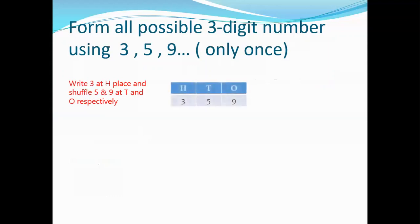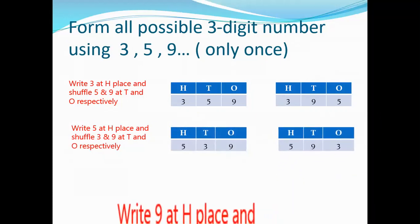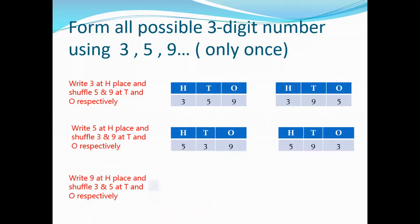Let's take one example. Form all possible three-digit numbers using 3, 5, 9. Okay, so first of all, what are we going to do? We are writing 3 at hundreds place and shuffle 5 and 9 at tens and ones respectively. So first number becomes 359, then 395.